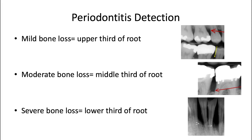For periodontitis detection, we can also use x-rays to evaluate bone loss. Mild bone loss is defined as the bone level being lower than normal but still in the upper third of the root. A typical presentation is where the alveolar crest area becomes a bit fuzzy — not quite as clear as it would be in a healthy patient. The normal bone level should be about 1 to 2 millimeters below the cemento-enamel junction, so mild bone loss may be an additional 1 to 2 millimeters of bone loss beyond that point.